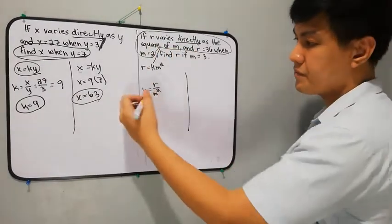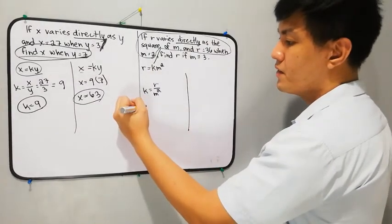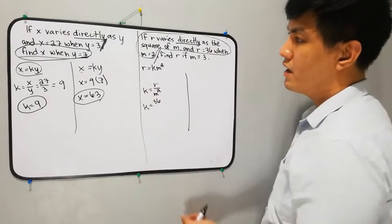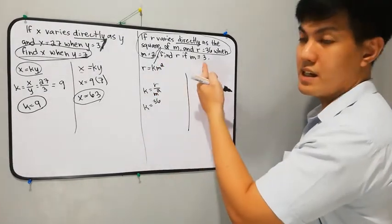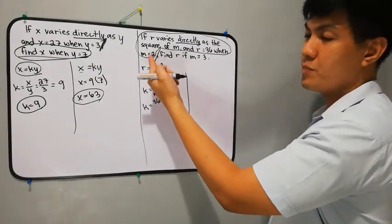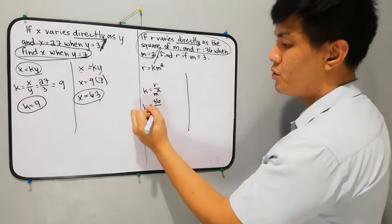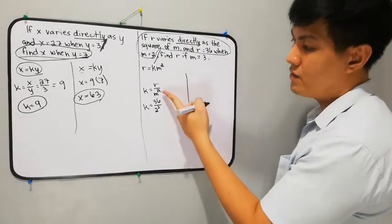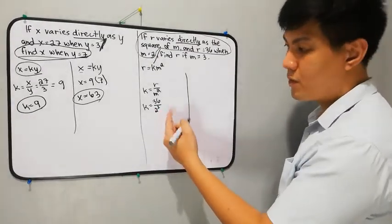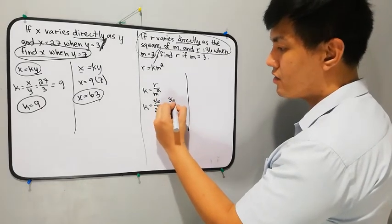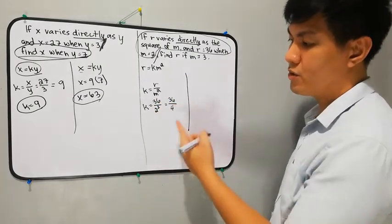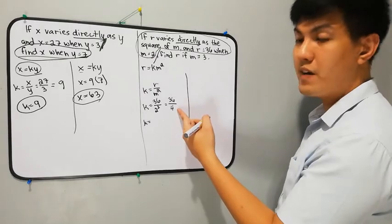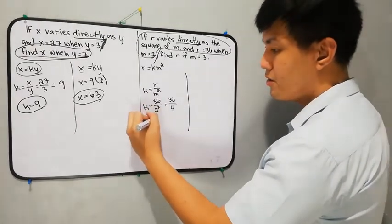Next, we replace the values. R is equal to 36, and M — is it 2 or 3? It should be 2, because this is part of the first statement. So we have 36 over 2 squared. Don't forget to write the squared. Simplify the exponent first: 2 squared is equal to 4. So we have 36 over 4.